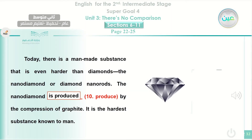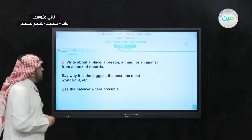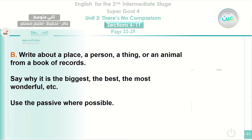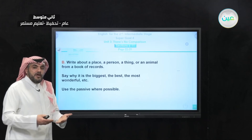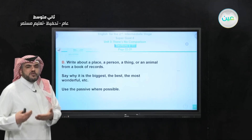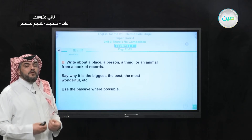Exercise B: write about a place, a person, a thing, or an animal from a book of records — something that stands out and is distinguished. Say why it is the biggest, the best, the most wonderful, and so on. Use the passive where possible. Remember: use the verb 'be' — am, is, are in present, or was/were in the past — followed by the past participle form of the verb.